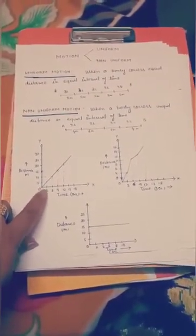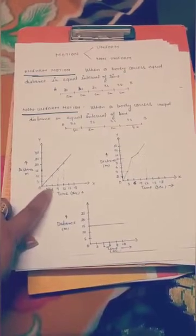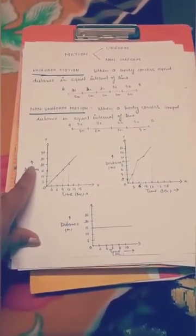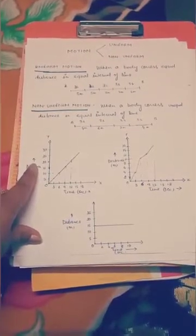the distance covered in the first three second, five meters, second three second, 10 meters like that. I have drawn the graph. It will come out to be a straight line.